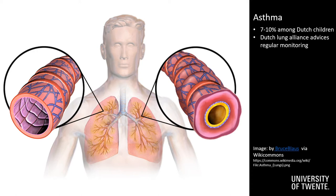Asthma is a chronic airway disease. The prevalence of asthma in children is very high. For instance, recent prevalence research in the Netherlands indicated that 7-10% of the children have asthma. With the help of certain tests, these children can be monitored regularly, which is also advised by the Dutch Lung Alliance.